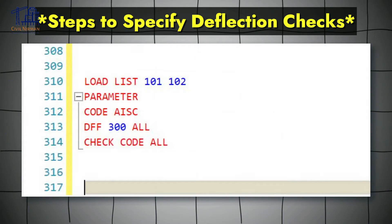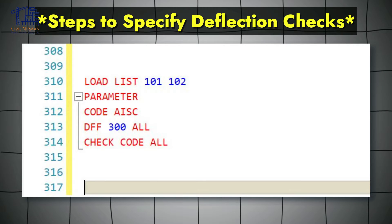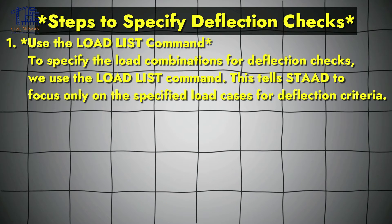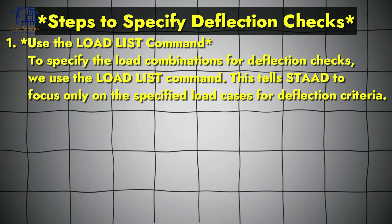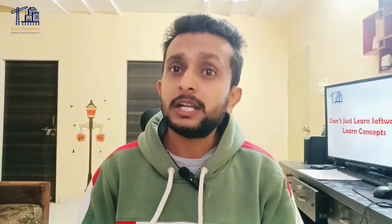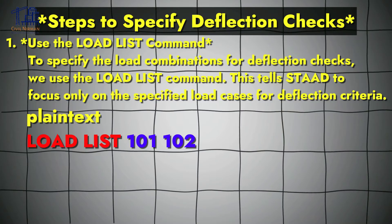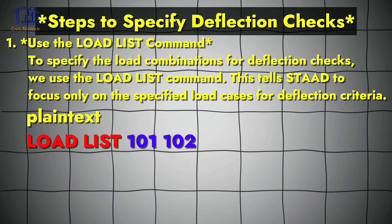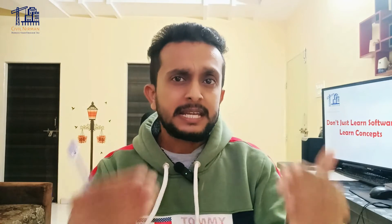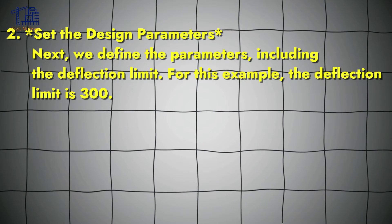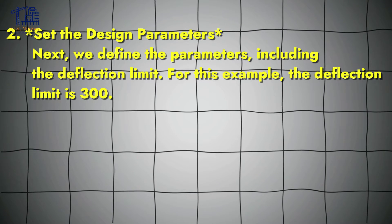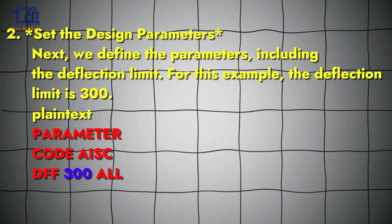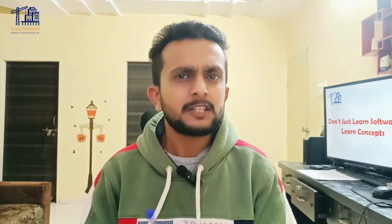Here is the syntax you can check out. We utilize the LOAD LIST command to specify the load combinations for deflection check. This tells STAAD to focus only on specific load cases for the deflection criteria. So we will implement LOAD LIST 101 102. In the next phase we set the design parameters and define the parameters including the deflection limit.